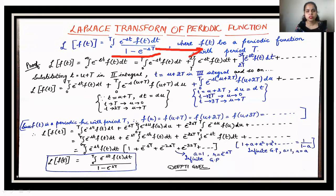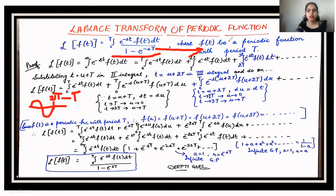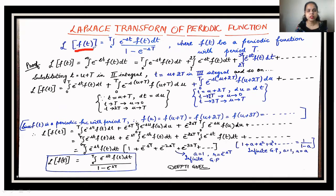The capital T is the period of the periodic function. For example, if we draw a sine curve, after an interval of 2π the curve repeats itself, so the sine or cosine curve has a period of 2π, which would be represented by capital T. So in the formula, f(t) is periodic with period T, and the integral runs from 0 to T, divided by 1 minus e^(-sT).